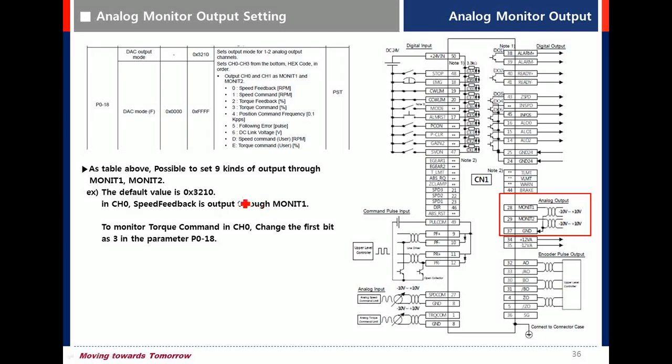Analog Monitor Output Setting. There are nine kinds of output. For example, zero is speed feedback and E is torque command.